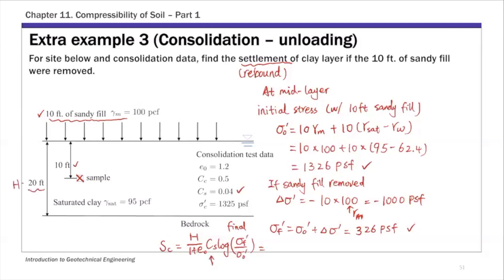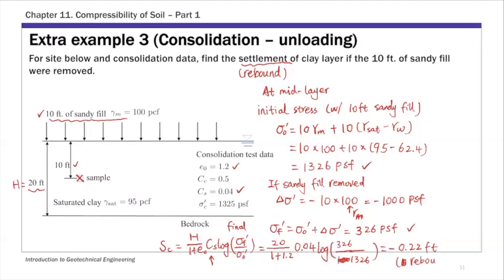Substituting numbers: H is the thickness of the entire consolidating layer, which is 20 feet; 1 plus e-naught is 1.2; Cs is 0.04; and we take log base 10 of 326 over 1326. The result is negative 0.22 feet. The negative value means it's a rebound — so if you remove that 10 feet of sandy fill, the clay is going to rebound 0.22 feet.